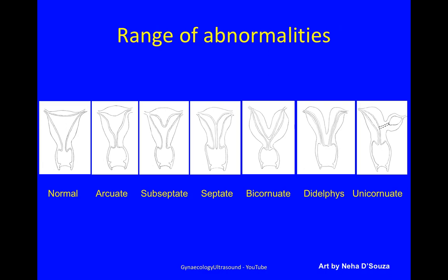This is a representation of the range of abnormalities described in the paper, from a normal uterus to an arcuate uterus, subseptate, septate, bicornuate, didelphus and unicornuate. We'll go through them one by one.